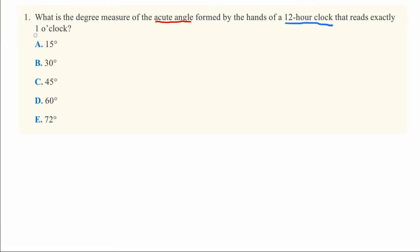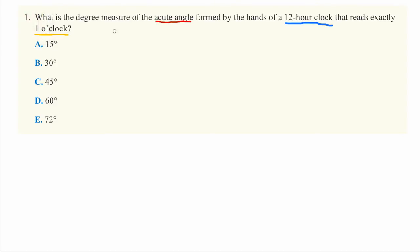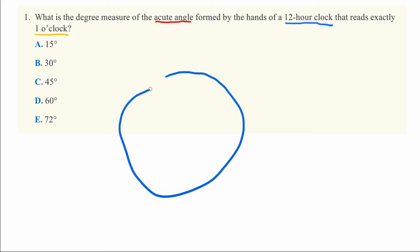Let me go ahead and draw out a 12-hour clock. You're going to have to either draw this or imagine it in your mind. So here we have a clock, and at the top is 12 — that's midnight or noon. At the bottom is 6 for 6 o'clock. We have a 9 over here on one side and a 3 on the other side.